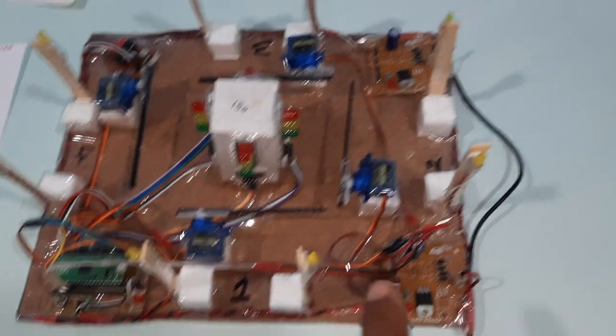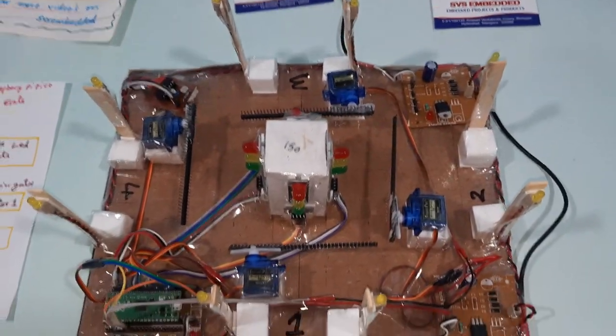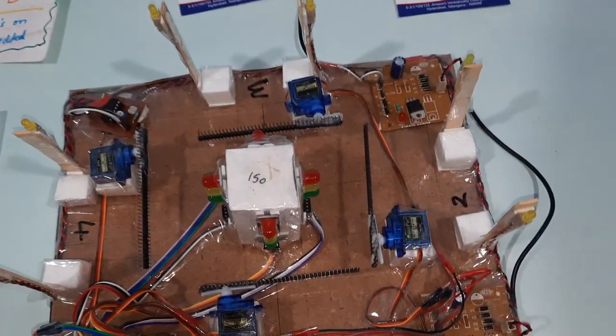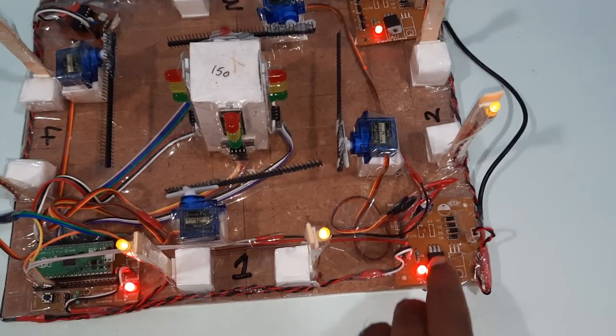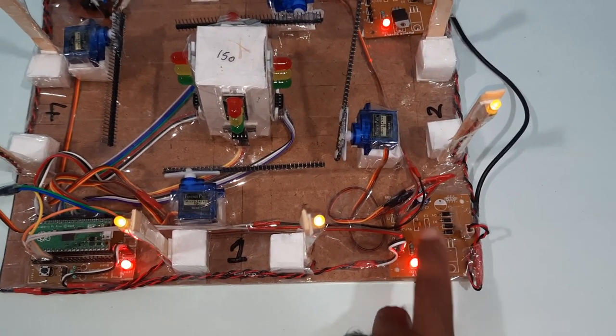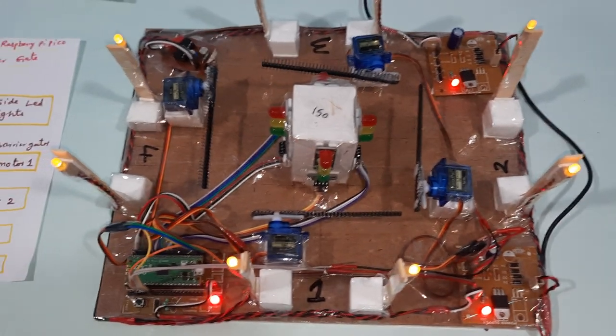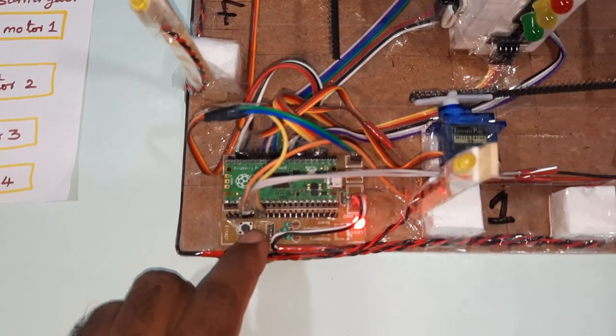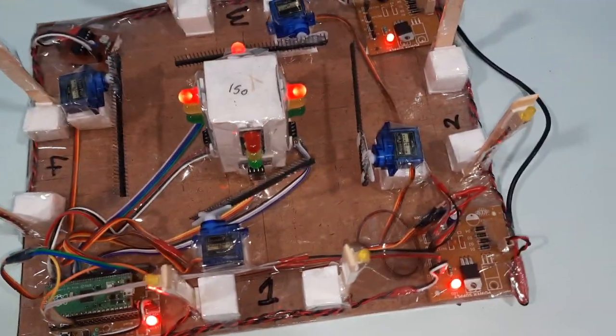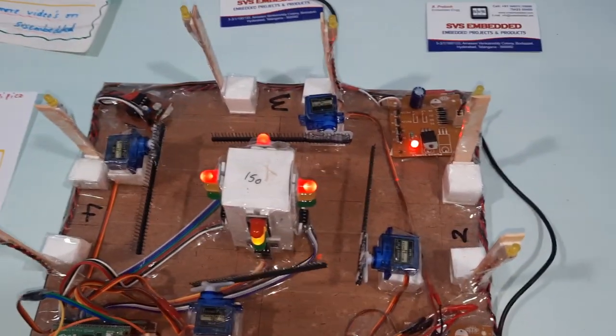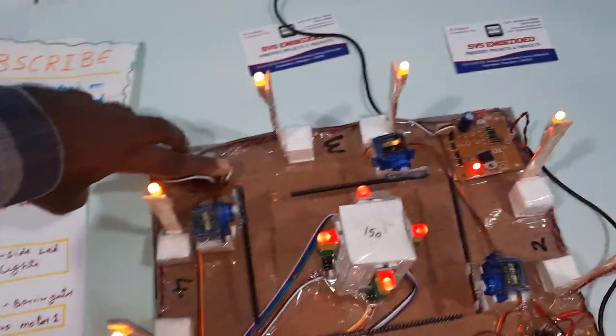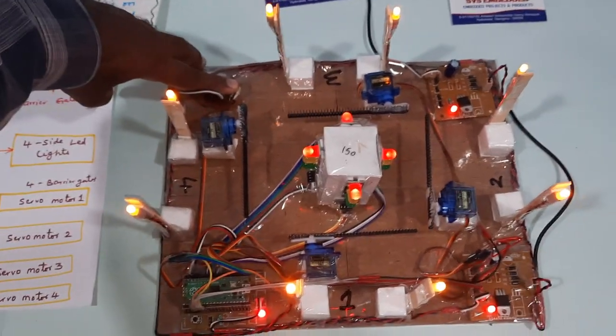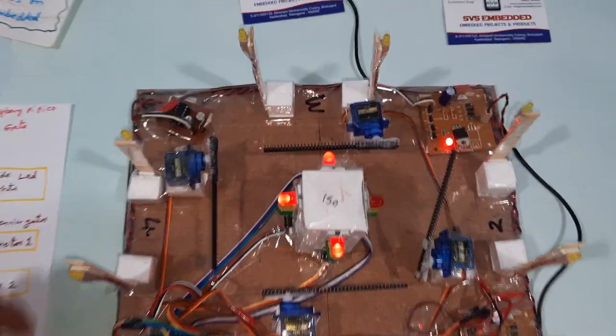Let's start with power supply: bridge rectifier, filter capacitor, 7805 regulator and one LED. We are using Raspberry Pi Pico board, RP2040 development board, and there are four side sensors. When it is dark, lights should be on. When sunlight is present, lights should be off.